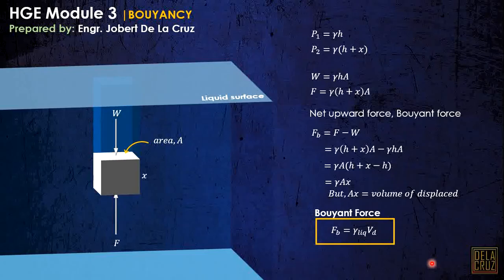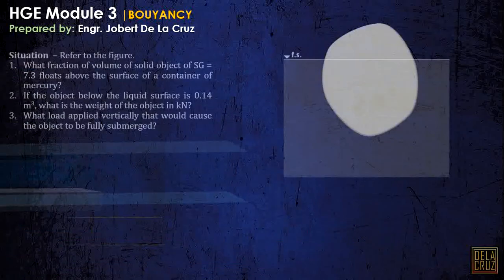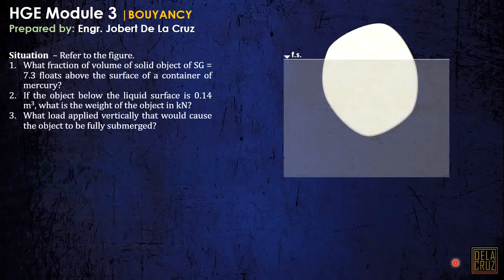Generally, by principle, the buoyant force is due to the change of pressure at any elevation in the liquid — that is the principle, because of the change of pressure. So let's start an example. What fraction of the volume of a solid object that has a specific gravity of 7.3 floats above the surface of a container of mercury?